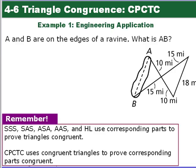In our example here, we have a diagram with a ravine, and it wants to know what the measure of AB is. So we're going to show that these two triangles are congruent, and then use CPCTC to find the length of AB.